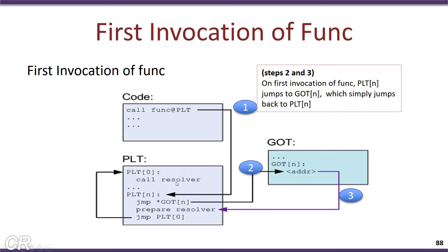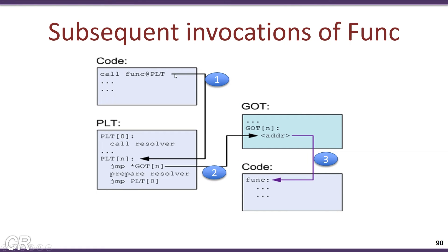After the call to the resolver, the actual function gets invoked. So the first invocation of func invokes func@PLT, which makes a dummy branch, prepares the resolver, and calls the resolver. The resolver identifies the actual address for the func function, fills that address into the GOT entry, and then invokes the function.